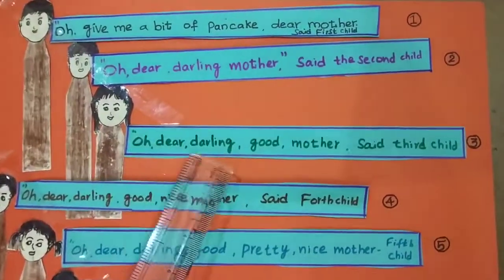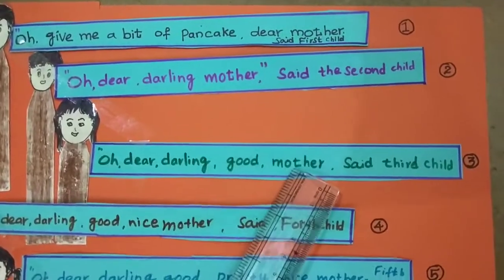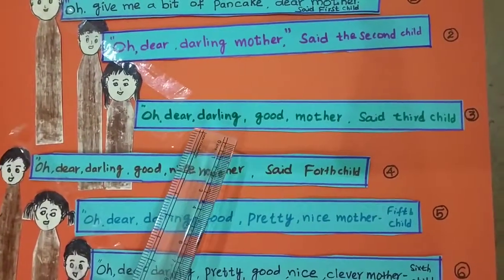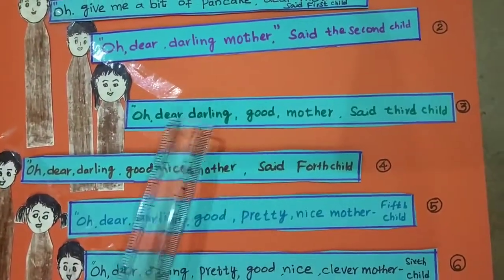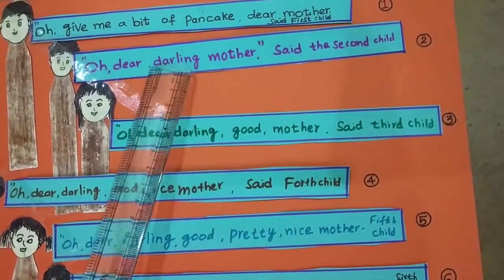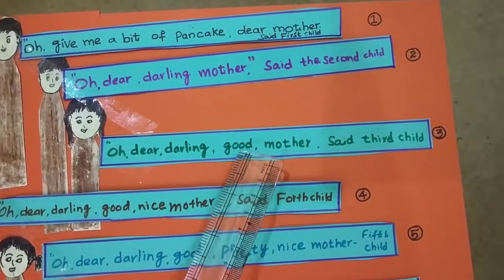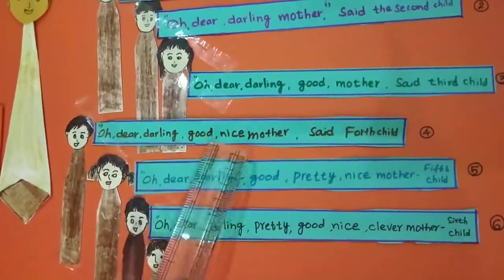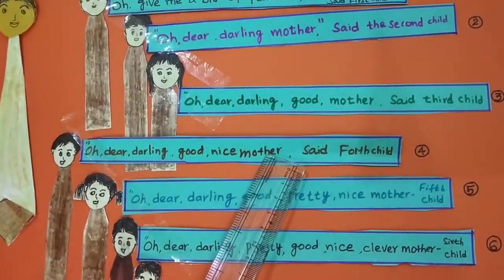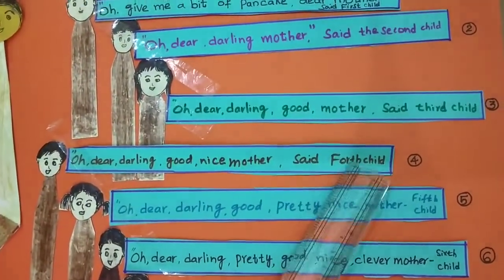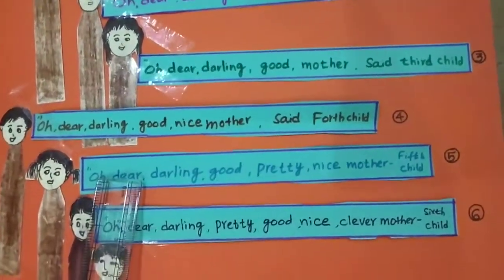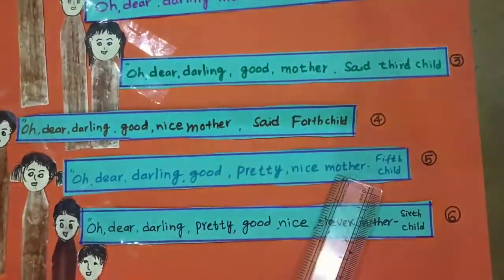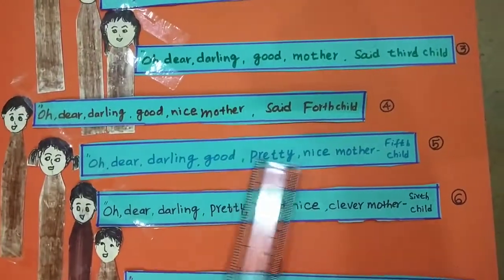The third child says: Oh, dear darling, good mother. The fourth child also says: Oh, dear darling, good mother. The fifth child says: Oh, dear darling, good, pretty, nice mother — adding the word 'pretty' to please her and get the pancake.